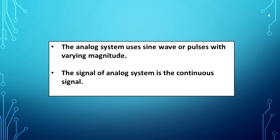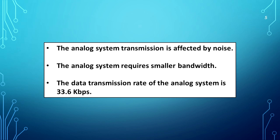The analog system uses sine waves or pulses with varying magnitude. The signal of an analog system is a continuous signal. The analog system transmission is affected by noise. The analog system requires small bandwidth. The data transmission rate of the analog system is 33.6 Kbps.